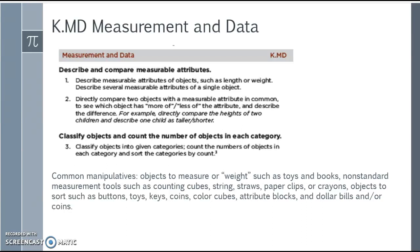Common manipulatives in this section include objects to measure or weigh such as toys and books, non-standard measurement tools such as counting cubes, strings, straws, paper clips, or crayons, and objects to sort such as buttons, toys, keys, coins, color cubes, attribute blocks, and dollar bills or coins.